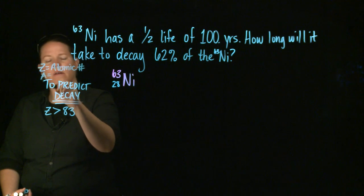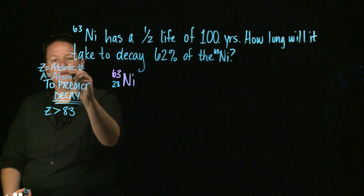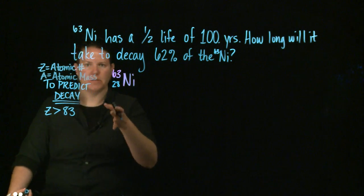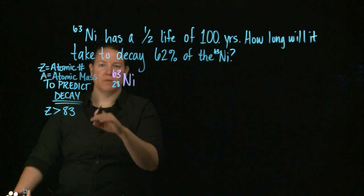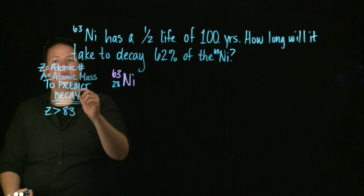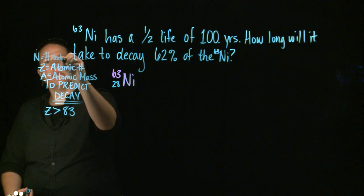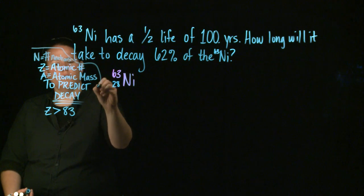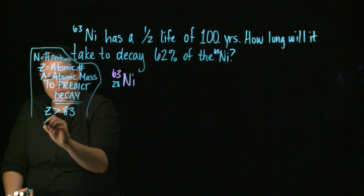And A equals the atomic mass — really we should say isotopic mass, because this is the number of neutrons plus the number of protons. Atomic number is just the number of protons. And N is the number of neutrons. So to predict decay, if Z is greater than 83, then it's going to alpha decay.